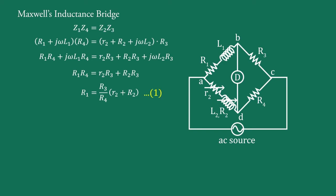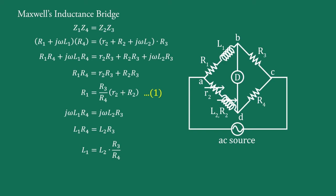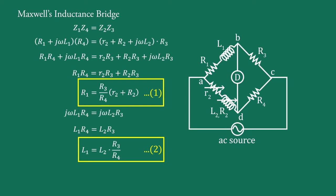Equating the imaginary parts of the balance equation, we get jωL1·R4 = jωL2·R3. Cancelling jω from both sides, we have L1·R4 = L2·R3, or equivalently, L1 = L2·(R3/R4). This is Equation 2. These two equations represent the two conditions of bridge balance.